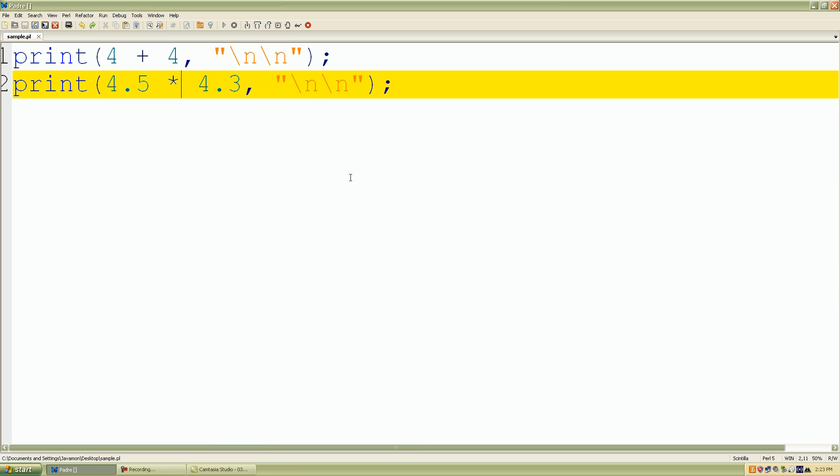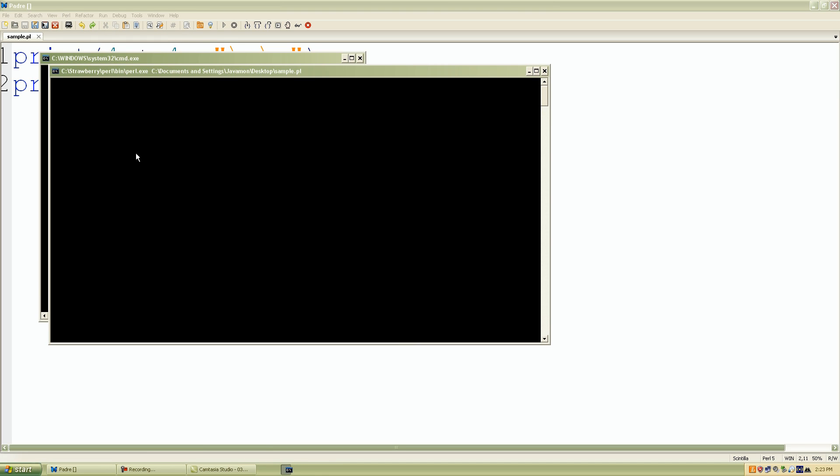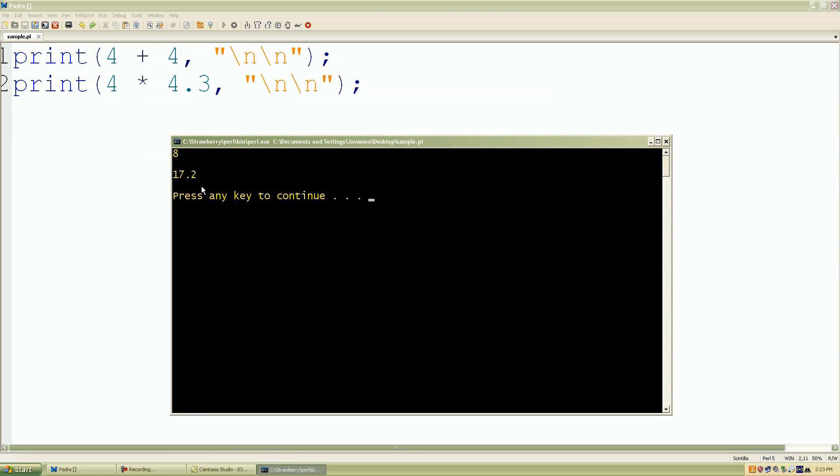So again, even if we do, let's say for example, if we just do a whole number and multiply it by a decimal number, let's see what happens as well. So I save my work, click run script, and look what happens, our second value. It still printed out a decimal value, 17.2.